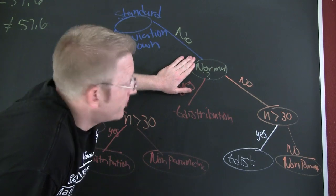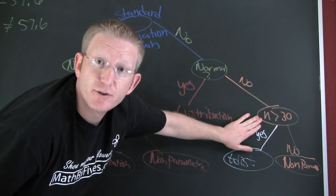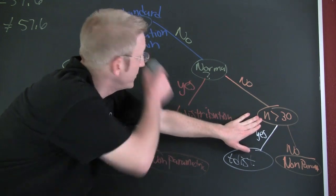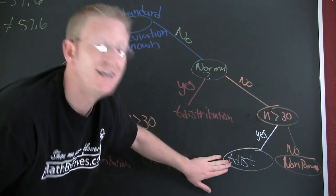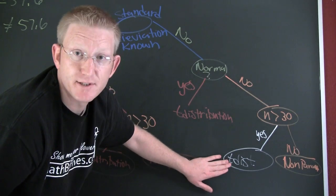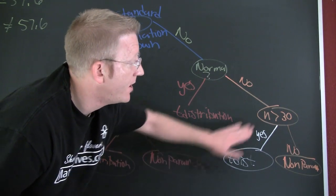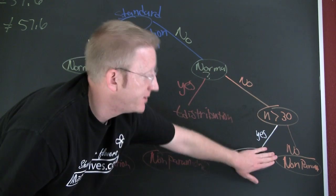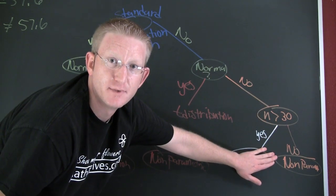If it's not normal, then you need to ask, can I invoke the central limit theorem for sampling distribution? If so, you still don't know the sampling distribution, so it's the t-distribution. When I mean sample standard deviation. But if it's not big enough to invoke the central limit theorem, then you're out. You're in non-parametrics. Hope this helps.